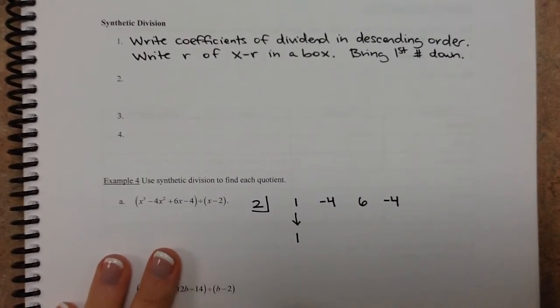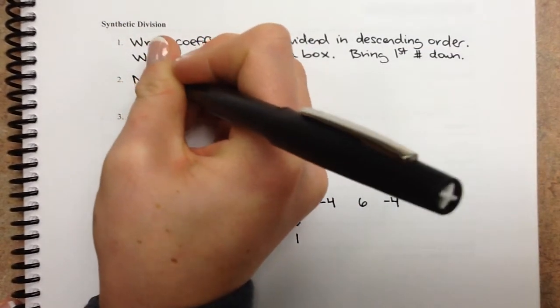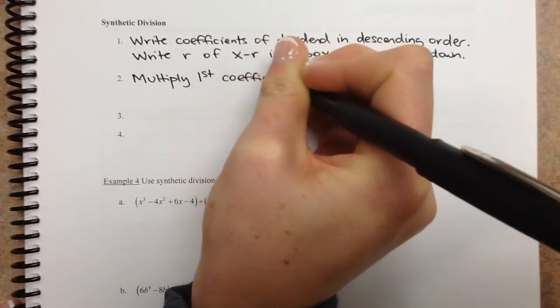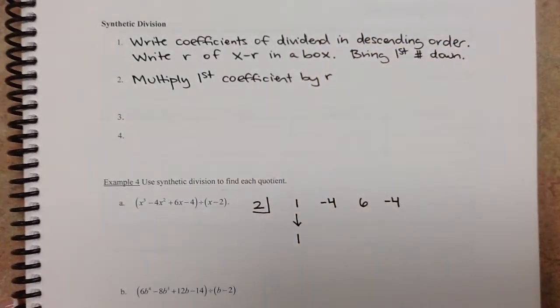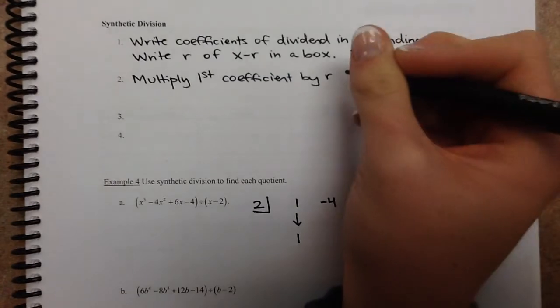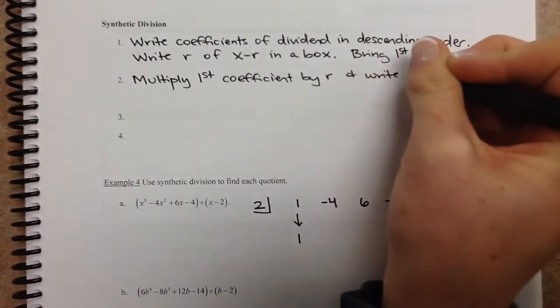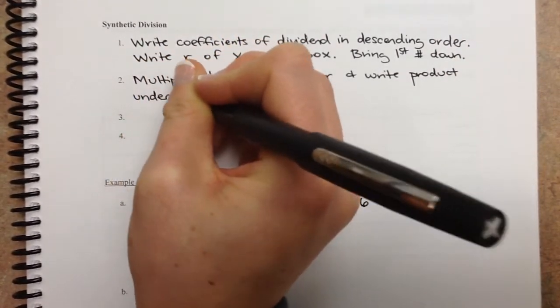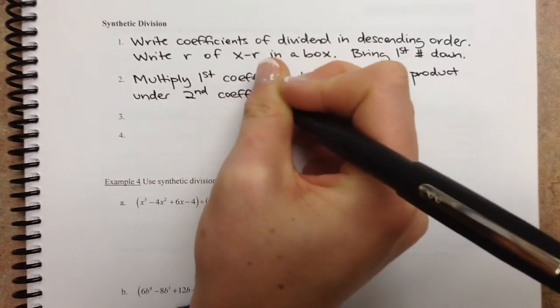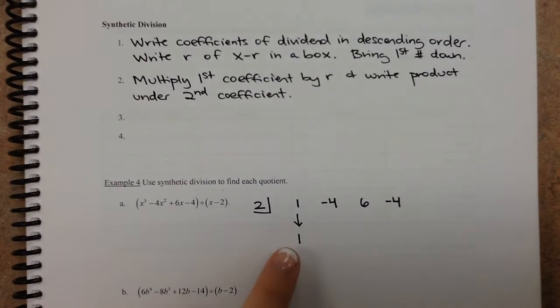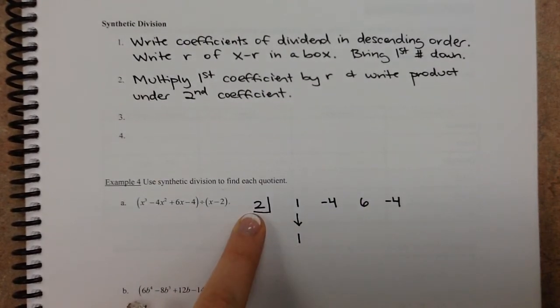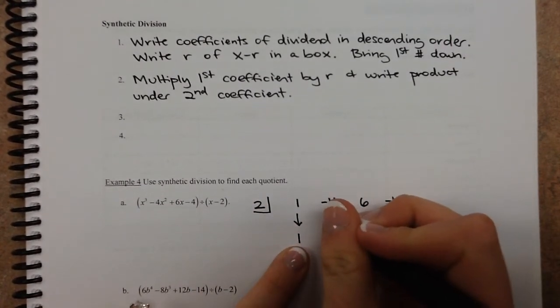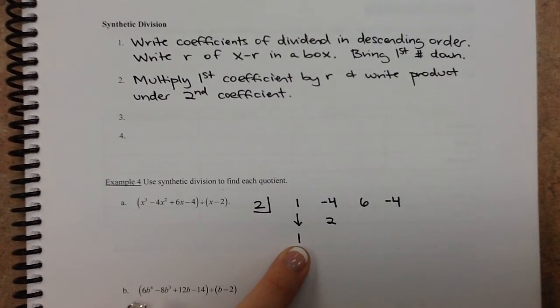So step 2: multiply the first coefficient by r and write the product under the second coefficient. So we multiply 1 times 2, and then we write the product under the second coefficient. So 1 times 2, we get 2, and we write that right here.